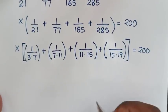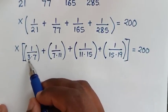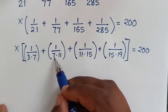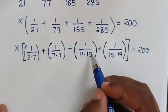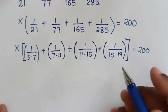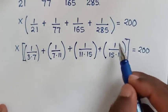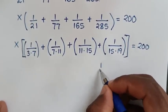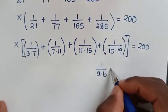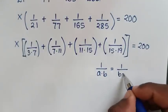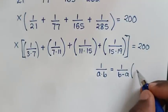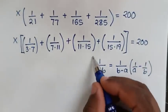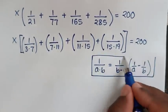Notice: the difference between 3 and 7 is 4, between 7 and 11 is 4, between 11 and 15 is 4, and between 15 and 19 is 4. We will now apply a rule: 1 over a times b equals 1 over (b minus a), times bracket 1 over a minus 1 over b, bracket.